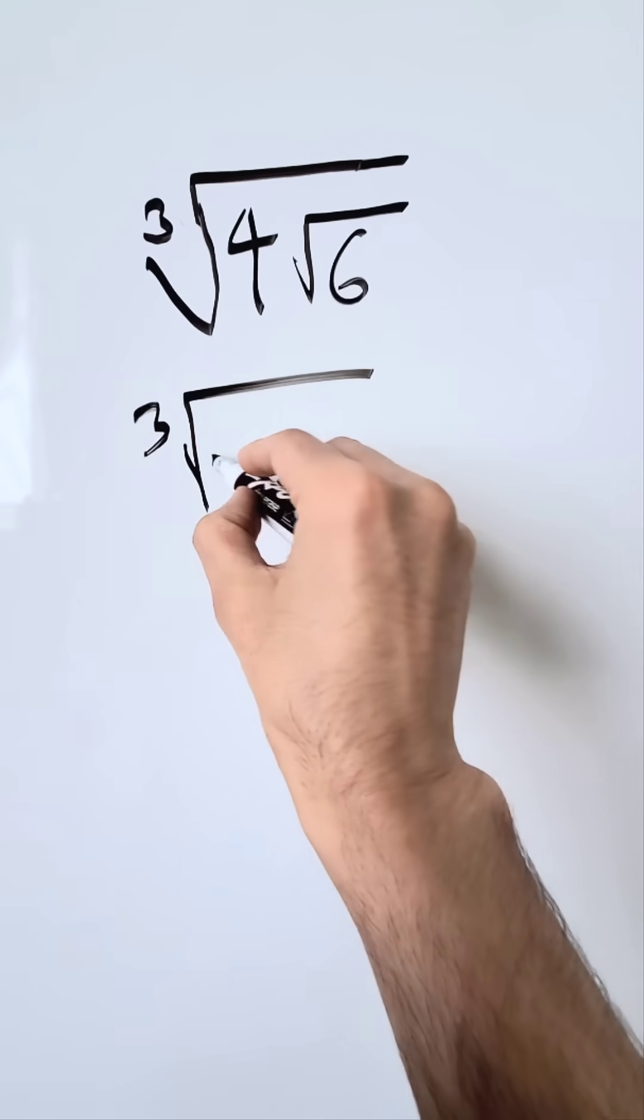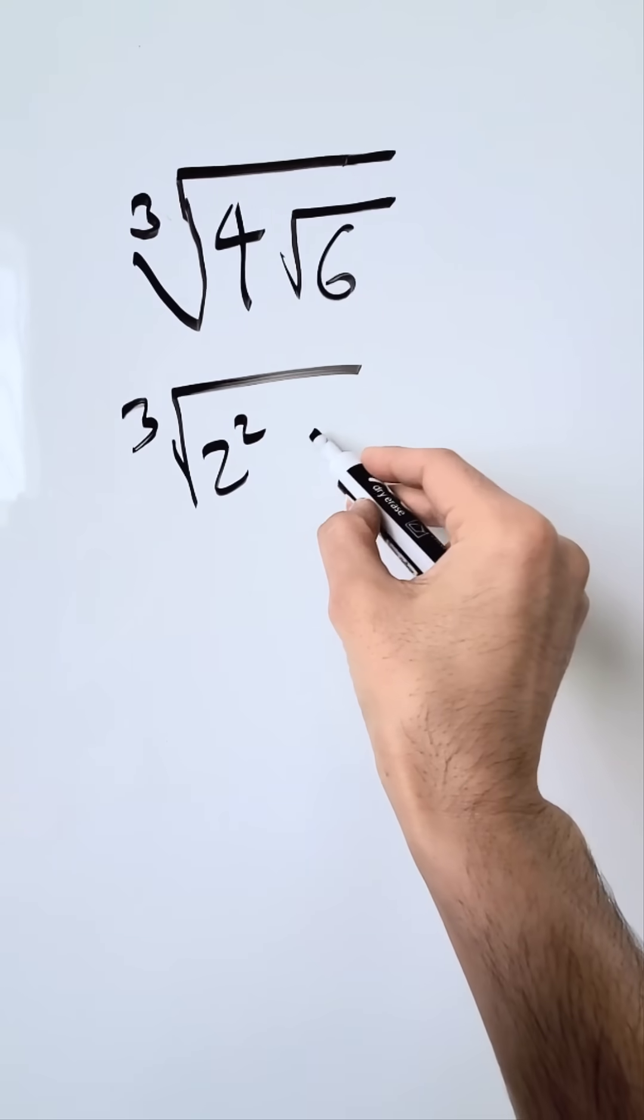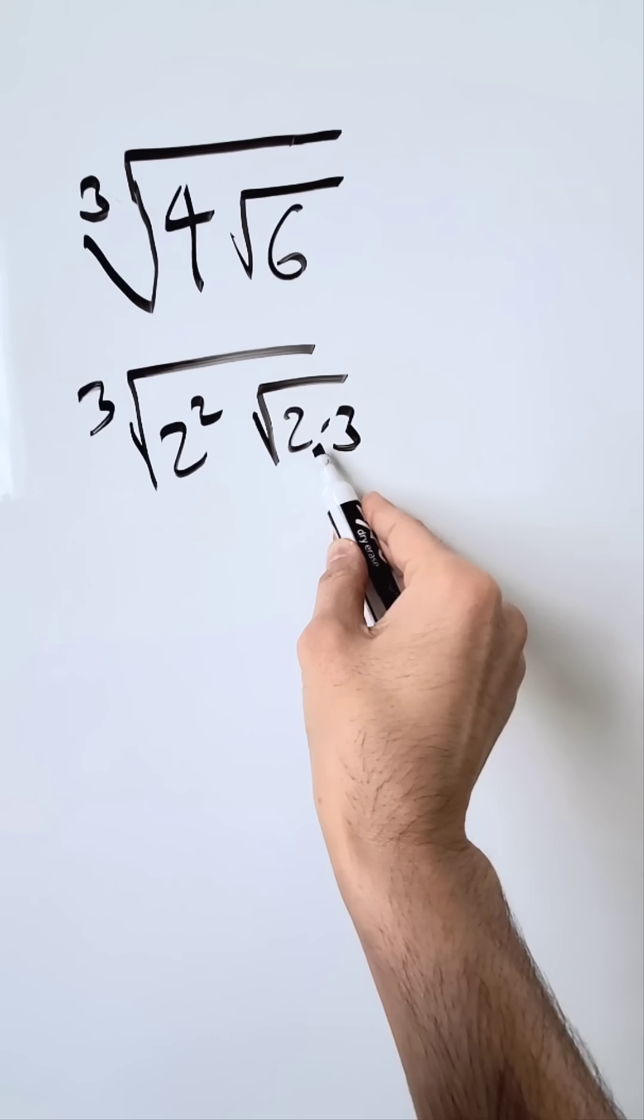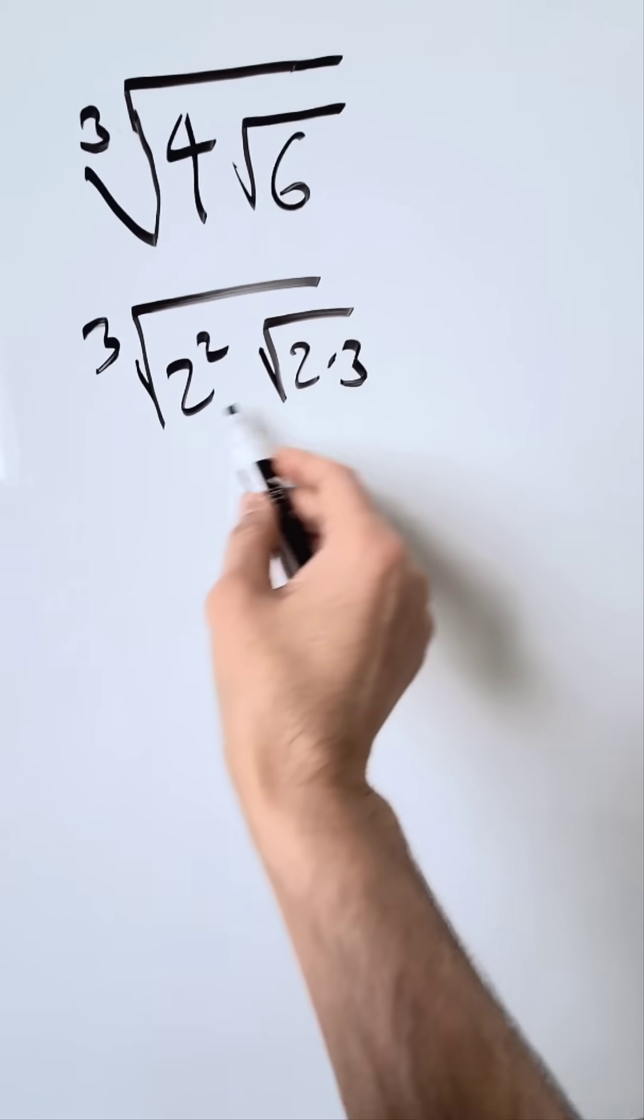Look over here, cube root. I am looking here at a 2 squared because that's a 4. And I'm looking here at a square root of 6 which is also 2 times 3. 2 times 3 is a 6 and it's making sense.